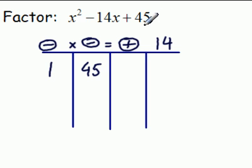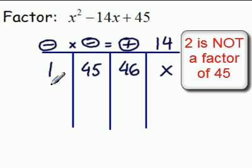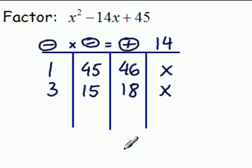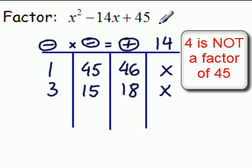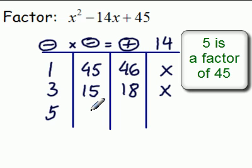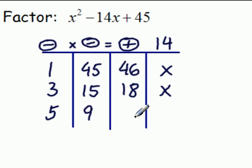1 times 45 is 45. This tells us we add them. So this is 46, not equal to 14. 2 doesn't go in, so we don't use 2. 3 goes in. 3 goes into 45 15 times. We're adding. So 18, not equal to 14. 4 doesn't go into 45. So now we're up to 5 and 9. And when we add those, we get 14. So we're done.